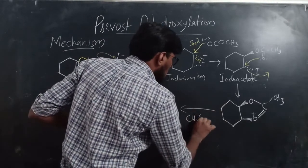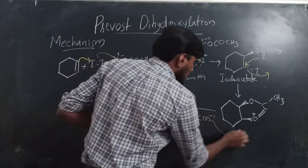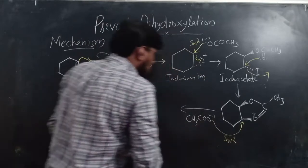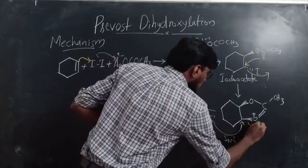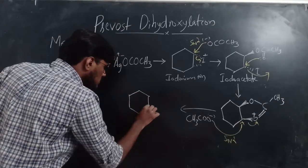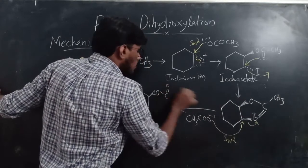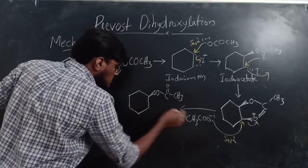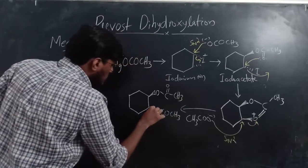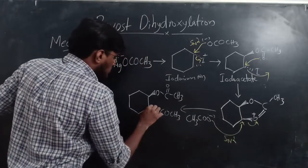In the next step, an acetate ion (CH3COO⁻) attacks this carbon through the backside in an SN2 manner. This bond cleaves and shifts to the oxygen, forming a product with two acetate groups — one in wedge and one in dash — representing the trans relationship. The attack is through the backside, so the groups end up in a trans configuration.